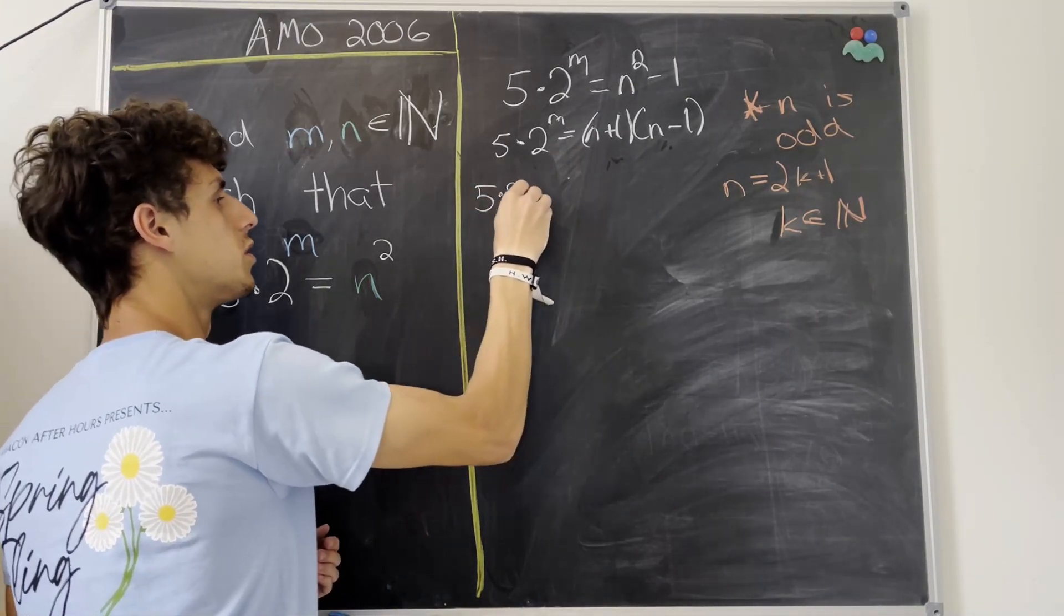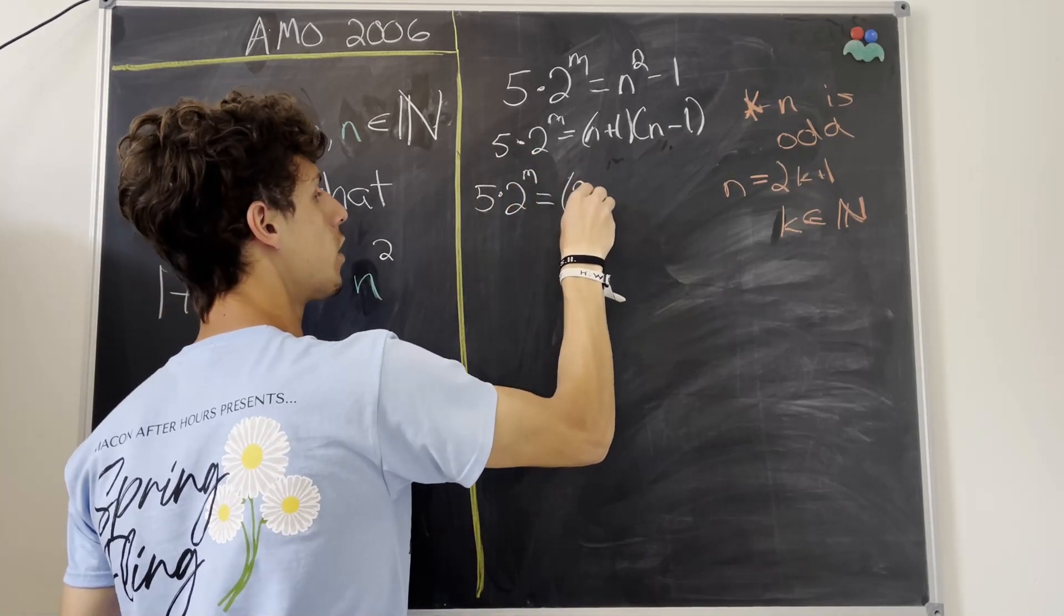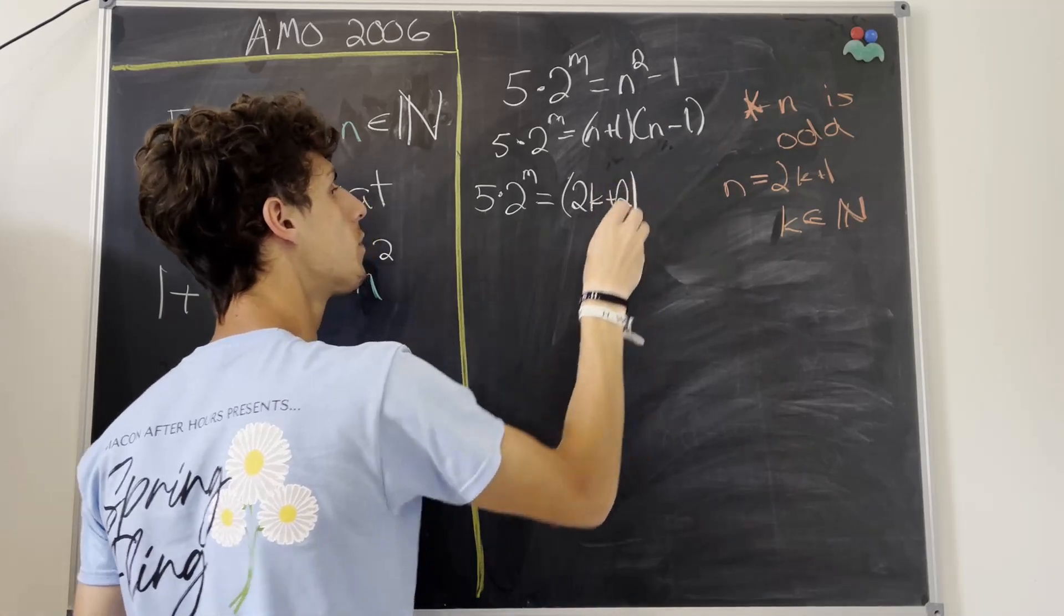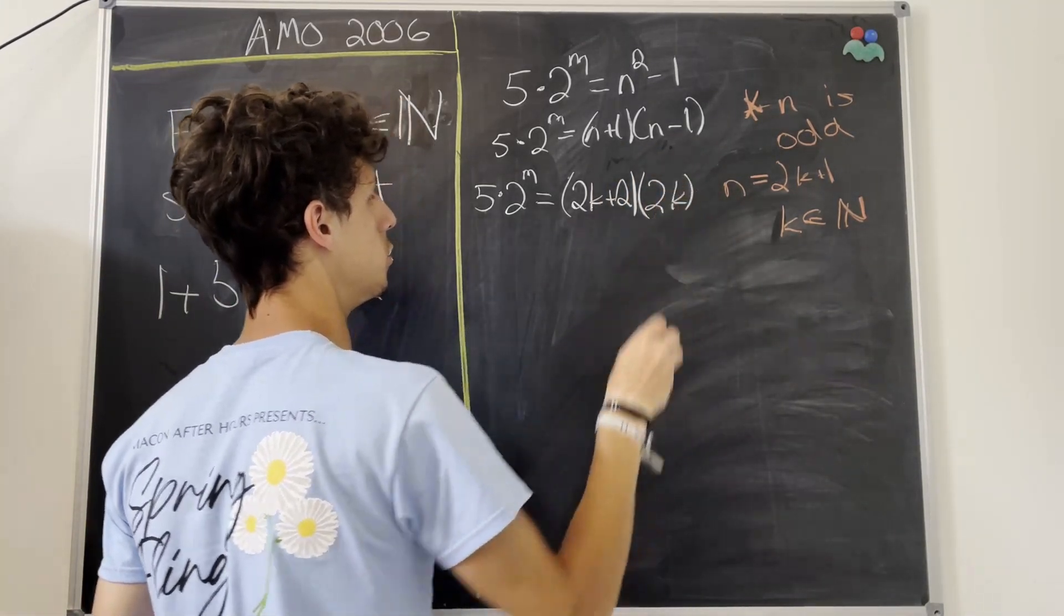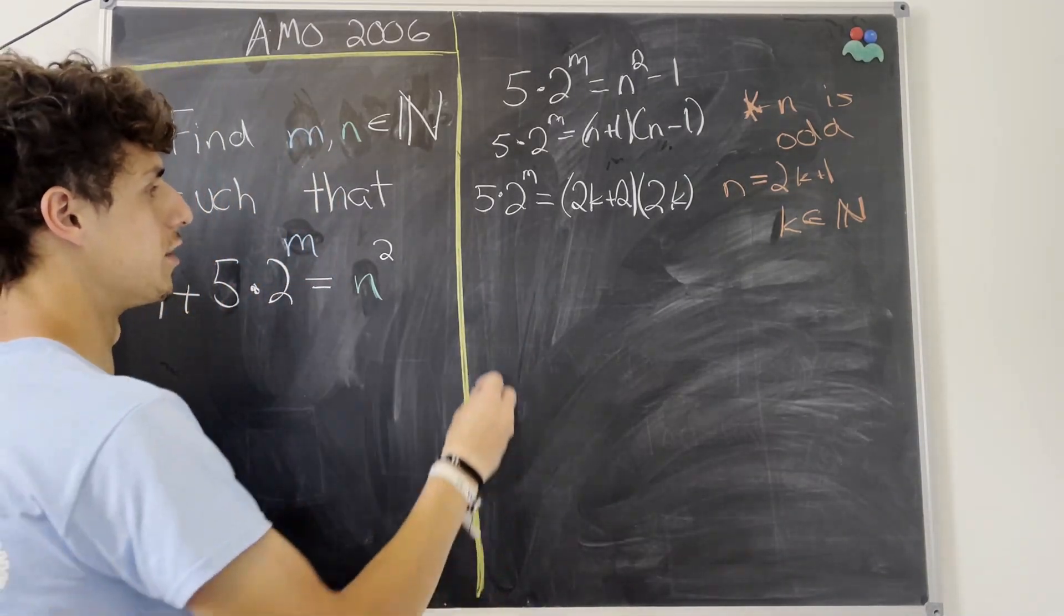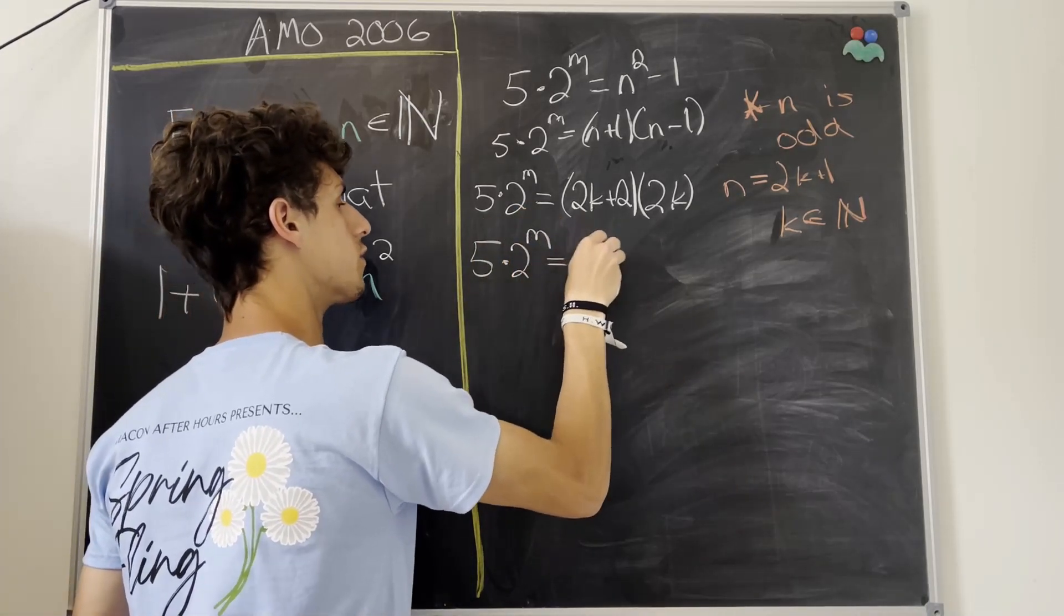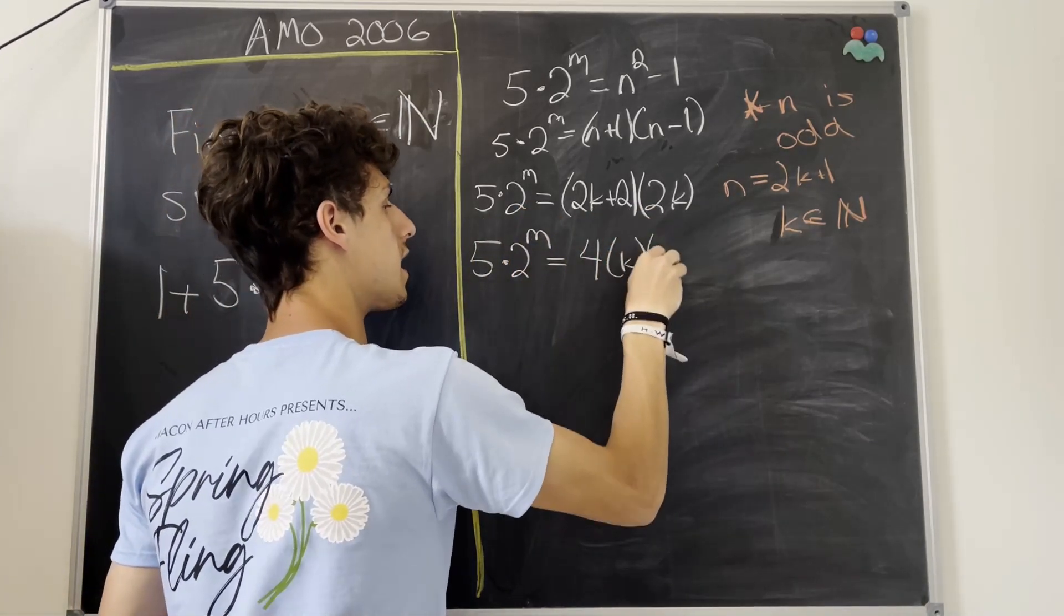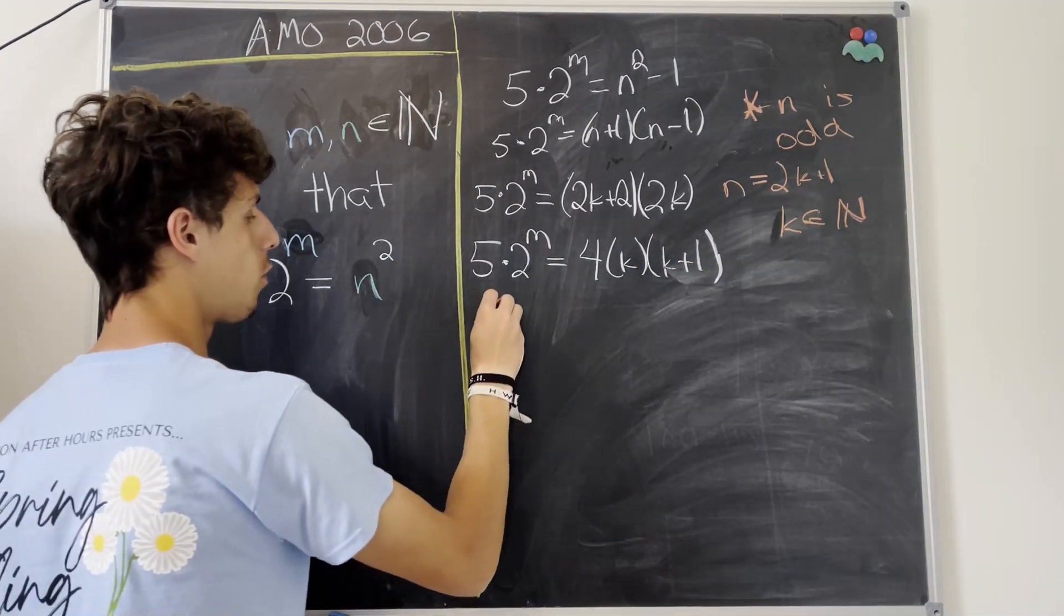So we have 5 times 2 to the m equals 2k plus 1 plus 1, that's 2k plus 2, times 2k plus 1 minus 1, so that's just 2k. But now we can factor a 4 out of this whole thing, and we'll get 5 times 2 to the m equals 4 times k times k plus 1. But now we can divide both sides by 4.